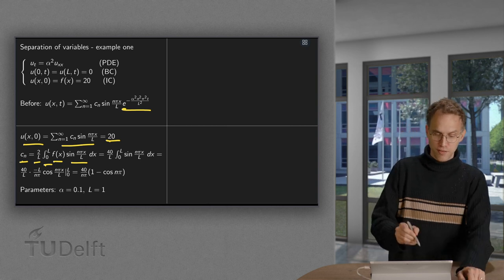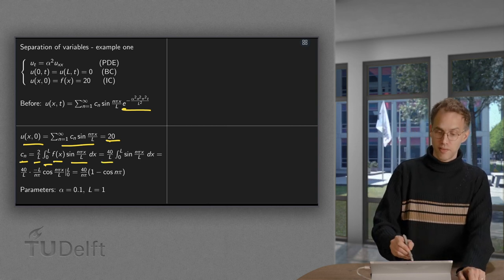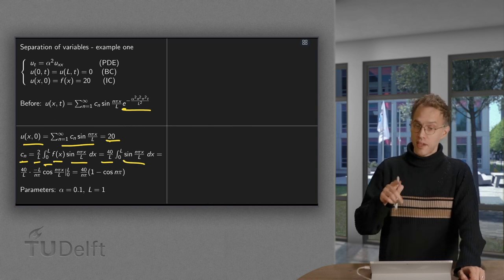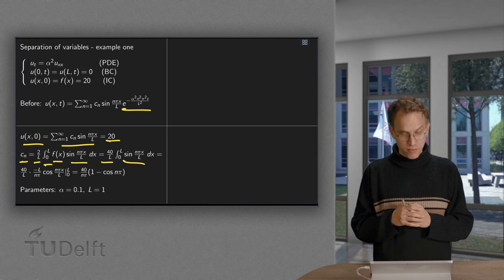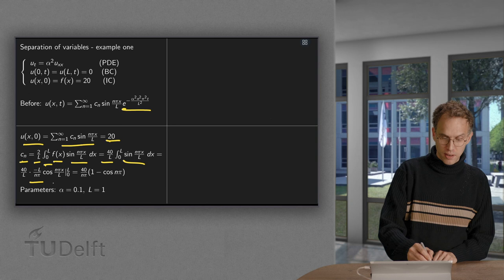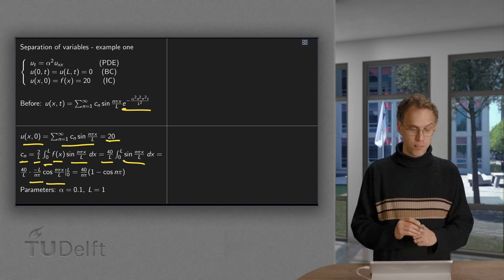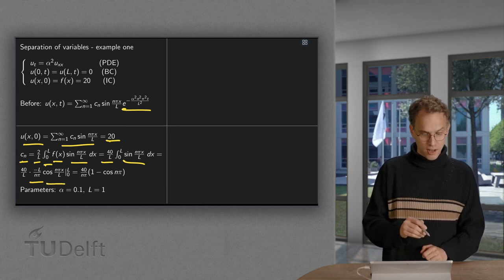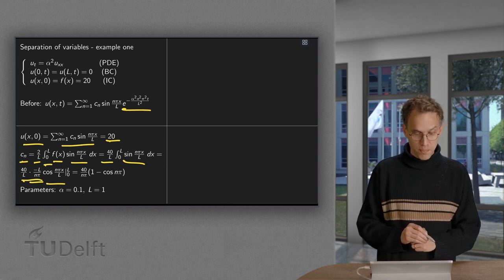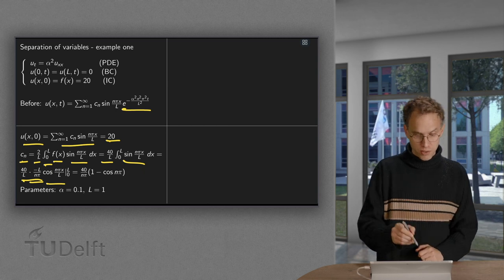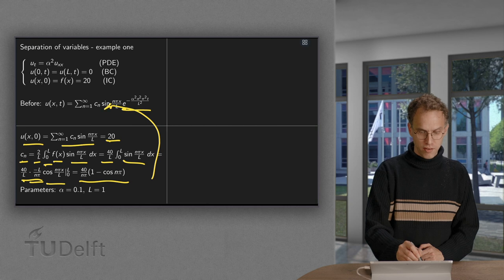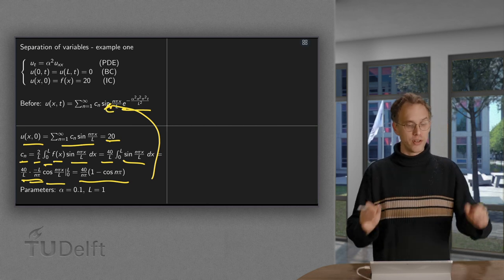f of x equals 20 can take in front, so we have a 40 over l. We have to integrate the sine n pi x over l. We can do it now directly because our function is relatively easy. It gives us l over n pi times a cosine, and if you plug in the boundaries, this part here simplifies to 40 over n pi, upper boundary gives us a 1 and the other one cosine n pi, so there we have our cn, which we can plug in over there. And then we have our u of x and t.